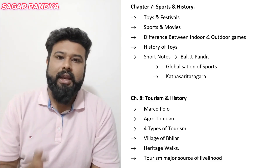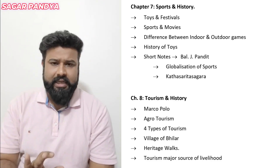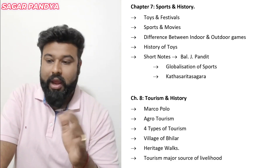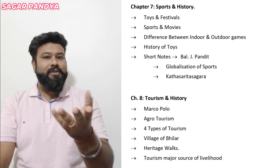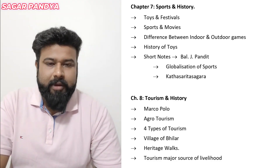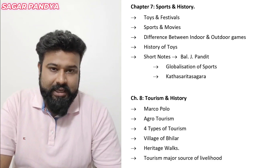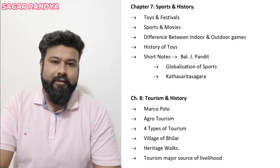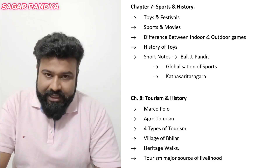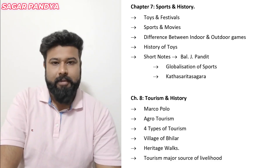In chapter number 8, Tourism, we can prepare the contribution of Marco Polo. Agro tourism will be the most important part. Along with the four types of tourism, we focus on geographic, historic, and agro tourism. The village of Bilar — which relates to strawberries — or Mahabaleshwar becomes a very easy answer if you have practiced it.